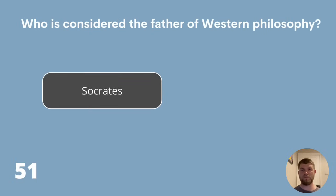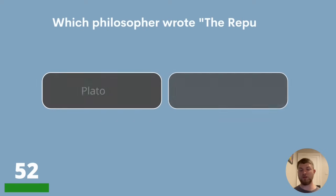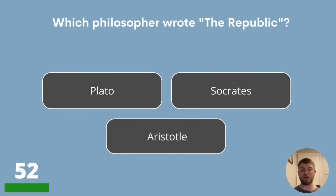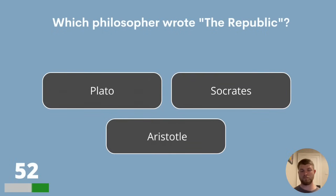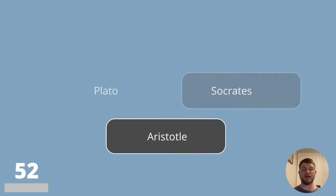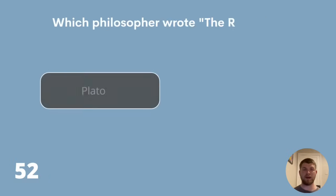Question 52. Which philosopher wrote The Republic? Is it Plato, Socrates or Aristotle? The answer is Plato.